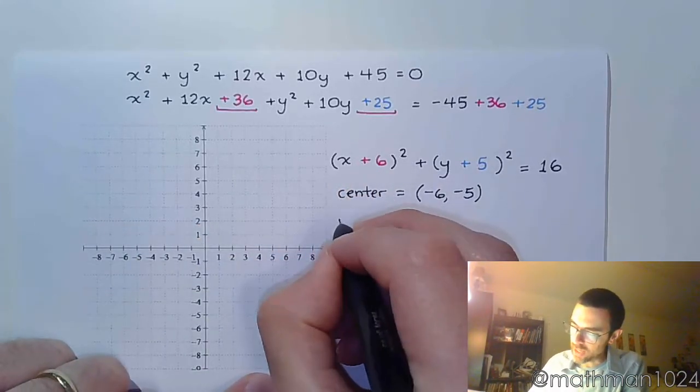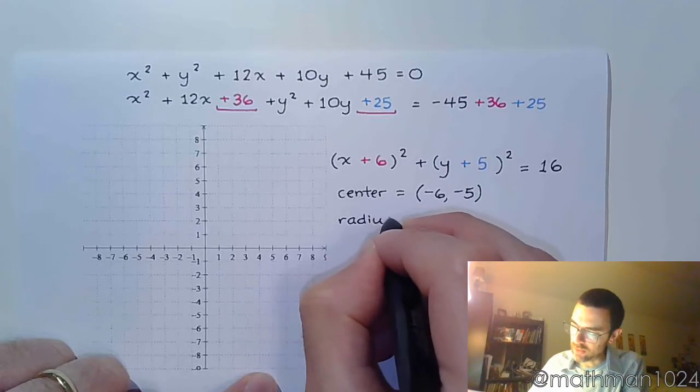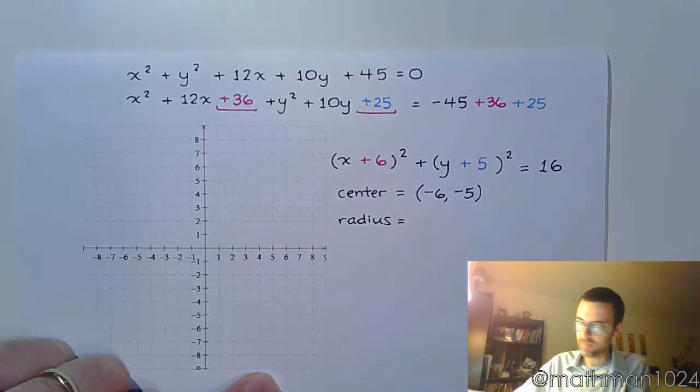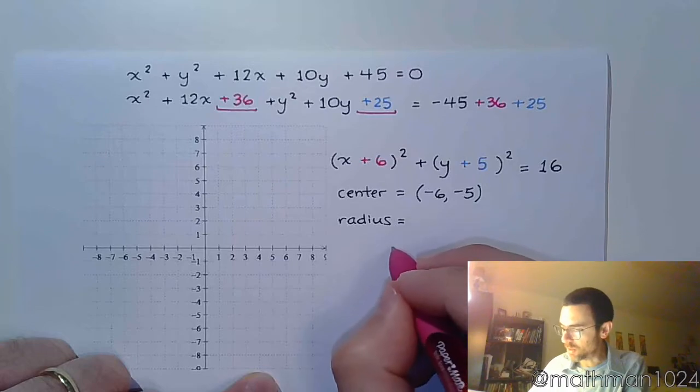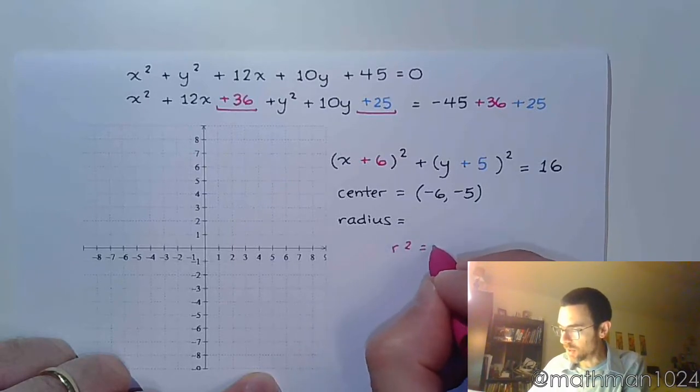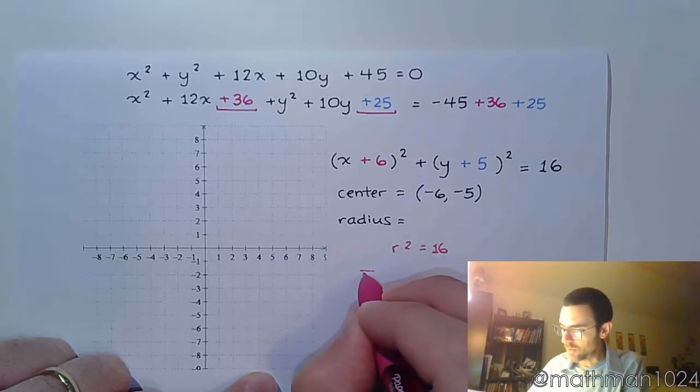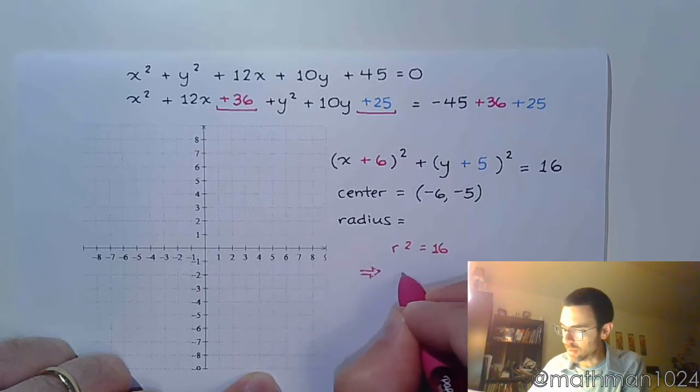And then we identify the radius. So this guy right here is supposed to be radius squared. So r squared equals 16, which then means that r equals 4.